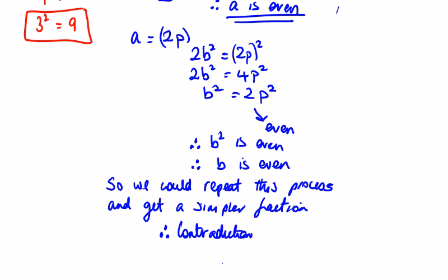Therefore, we can say root 2 is not rational as we assumed. Therefore, root 2 is irrational. So this is your proof by contradiction.